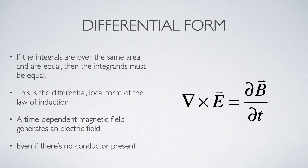So here is the more common representation of the law of induction: that the curl of the electric field is equal to the partial of the magnetic field with respect to time. What this is telling us is anytime there's a time-dependent magnetic field, it creates an electric field.